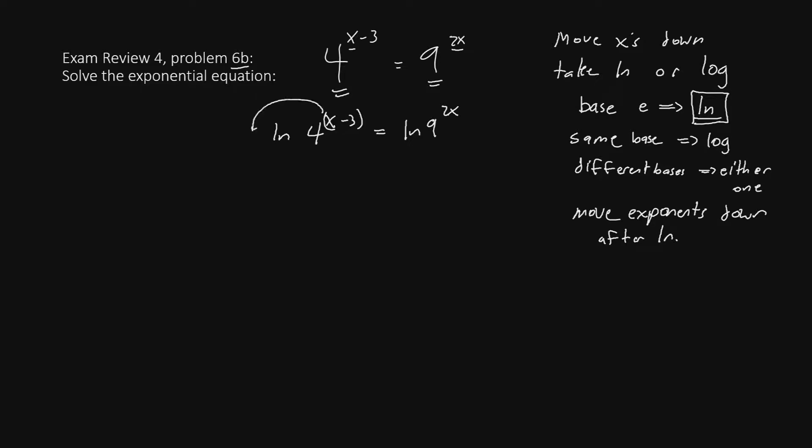So we'll move x minus 3 here and 2x here. We now have, in parentheses, x minus 3 ln 4 equals 2x ln 9.